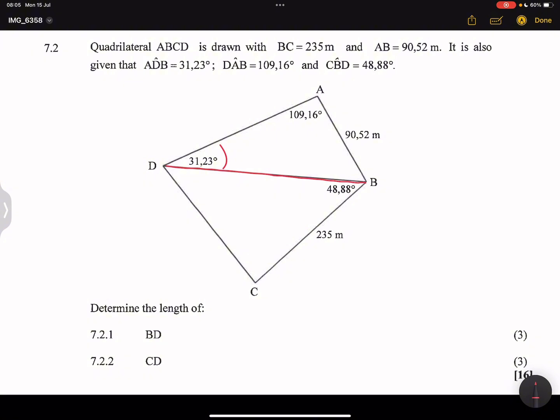So now we're going to say the sine of angle A divided by the side opposite that, which is DB, is equal to the sine of angle D divided by the side, or rather sine of angle ADB divided by the side AB. So we're going to use that.